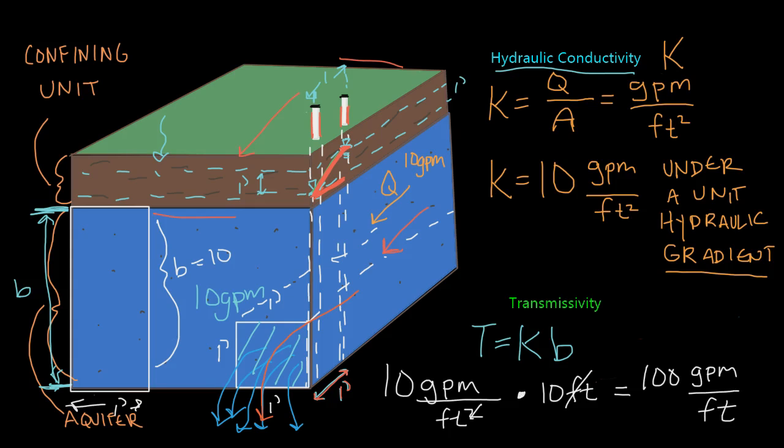So that is transmissivity. It's the flow rate of water through a one foot wide or a one whatever unit wide strip of that aquifer. And it takes into account the entire thickness of that aquifer. And I think I said earlier that hydraulic conductivity is more for describing the properties of a specific material. Transmissivity is better at describing how well water flows through an aquifer, because it's taking into account the thickness of that aquifer.